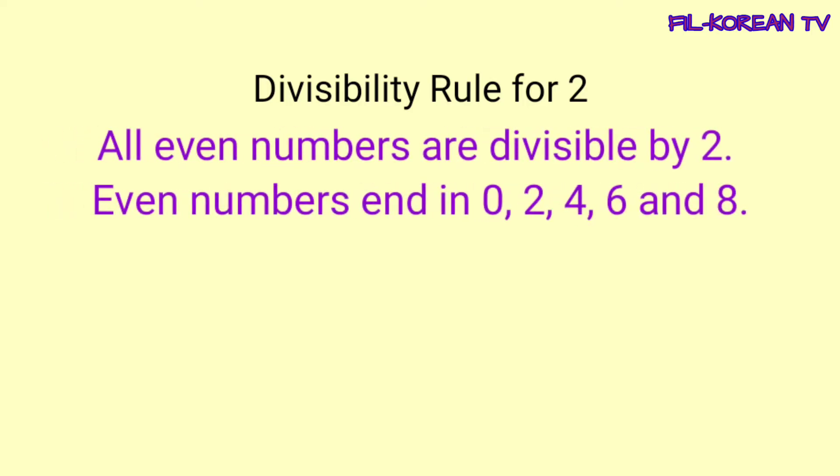Ngayon, alamin natin yung divisibility rule for 2. All even numbers are divisible by 2. Even numbers end in 0, 2, 4, 6, and 8. Lahat ng even numbers ay pwedeng ma-divide sa 2 — eksakto yung answer, walang remainder. Kapag sinabi natin even numbers, ito yung mga numbers na nagtatapos sa 0, 2, 4, 6, at 8.